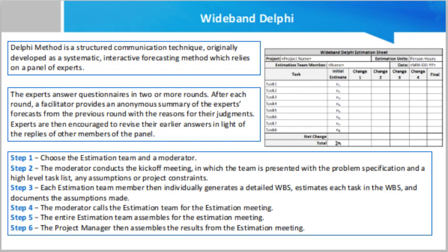Step 5.8 — each team member revisits his or her task list and assumptions and makes changes if necessary. The task estimates may also require adjustments based on the discussion. The team members then once again combine the changes in the task estimates to arrive at the total project estimate. Step 5.9 — the moderator collects the changed estimates from all members again and plots them on the round three line. Again, in this round, the range will be narrower compared to the earlier one.